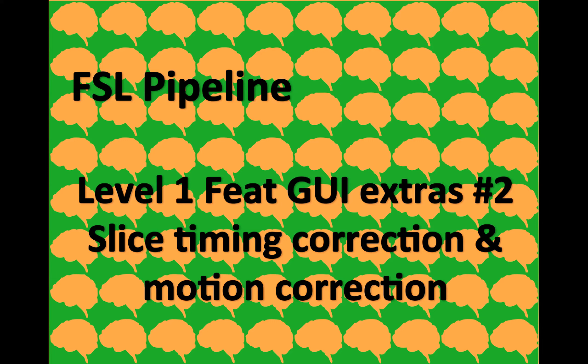We're moving on through the FSL pipeline and taking a pause to go through some of the options that can be set in the level 1 FEAT GUI which we've set up recently. This is the second video in the series — the last one talked about keeping your directories clean because of the practice FSL has of not overwriting a directory, but creating a new FEAT directory with a plus symbol.